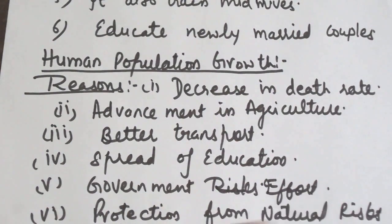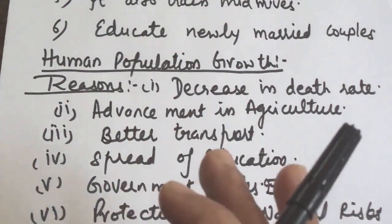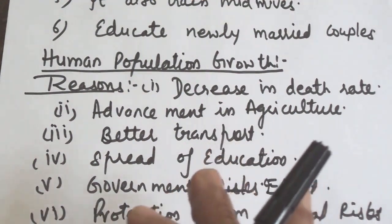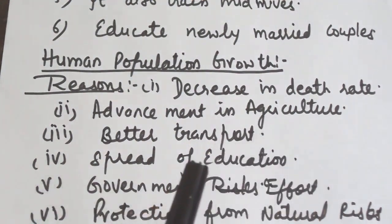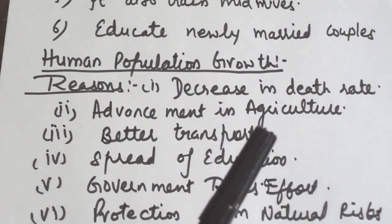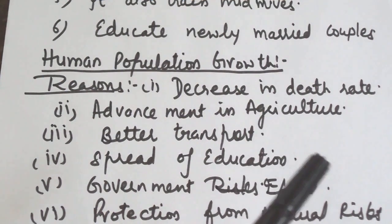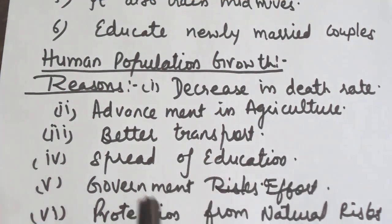Steps taken by the government such as introduction of the public distribution system, checking of smuggling of grains, and maintenance of reserve stocks have ensured food supply to all. Last is protection from natural risks. Advancement in science has led people to live better and protected lives. Living in houses in villages and cities with better hygienic conditions has protected people from adverse climatic changes, disease, and wild animals, thereby decreasing the death rate.